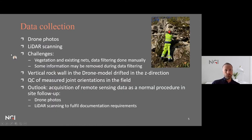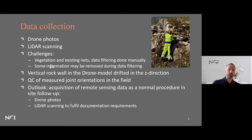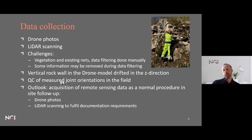For data collection we use both drone photography and LiDAR scanning. Key challenges include removing vegetation and existing rock support nets from the point cloud. We use the combination of drone photos and LiDAR because drone photogrammetry models tend to drift in the z-direction, especially for very steep walls and overhanging rock. We also performed quality control of measured joint orientations in the field, because it's always important to verify digitally derived results on site.